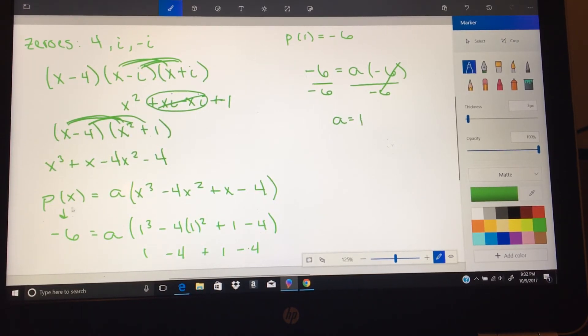Which makes this really easy, because I'm going to come back to my function here. I'm going to take what I got for a, I'm going to plug that in, and I'm going to distribute. But when I plug a 1 in, right there,